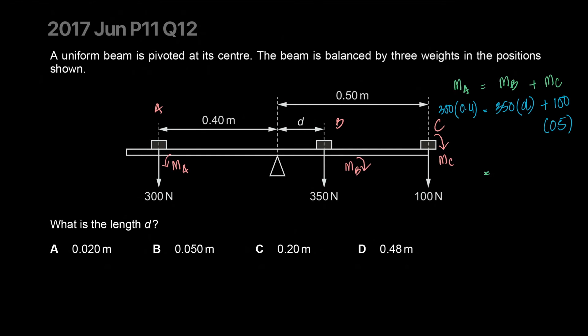Calculator. 0.4 times 300, 120. 350D. I'll just write that down. 350D plus this is going to be 50. So subtracting that, you have 50, 60, 70, 70 left. So D will equal to 70 divided by 350 which is 7 over 35. That's 1 over 5 which is 0.2. Look at that.